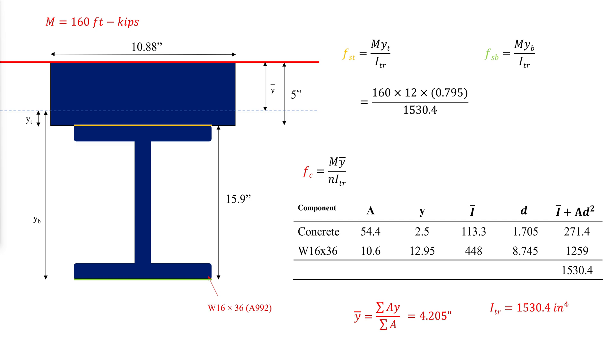The concrete is assumed to carry no tensile strength, however. This means that the concrete below the neutral axis should be discounted. The geometry of the transformed section will then be different from what was originally assumed.